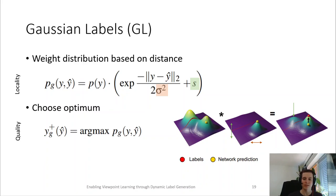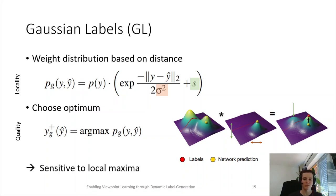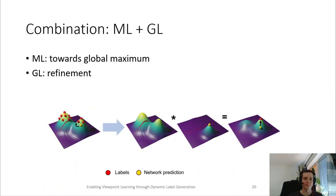However, the stronger locality of this method makes it sensitive to local maxima. For optimal performance, we propose to combine these two approaches by first training our network with the multiple label approach to guide the prediction towards an area around a global maximum. Then, in a second stage, we use the Gaussian labels to refine the predictions.